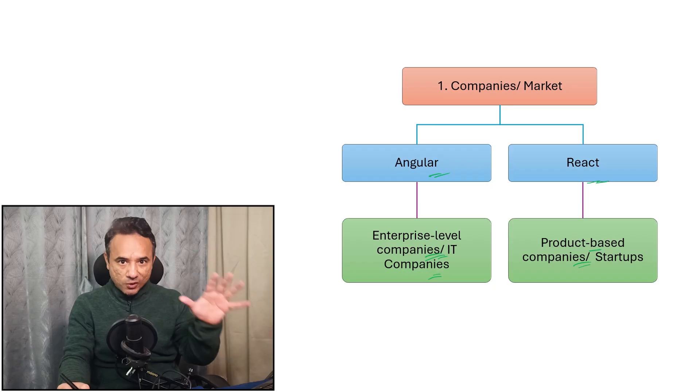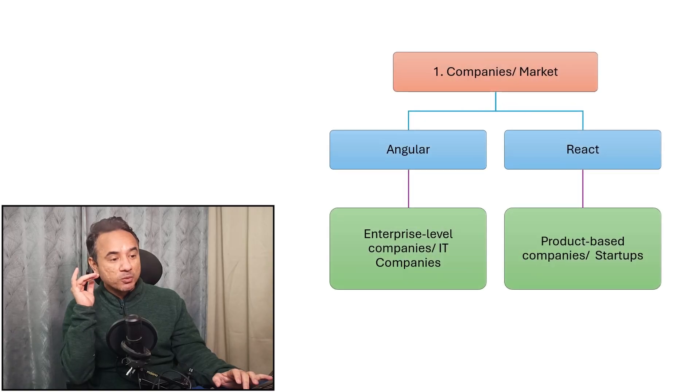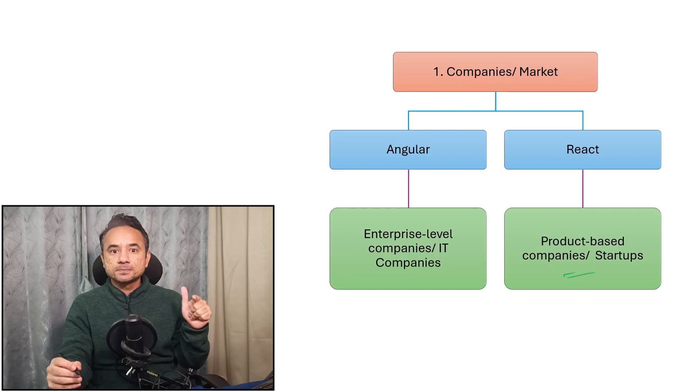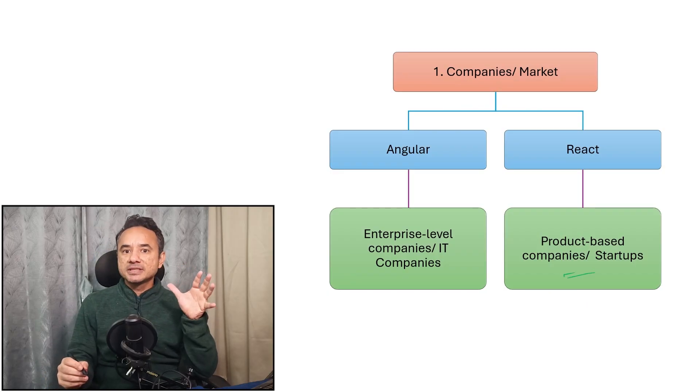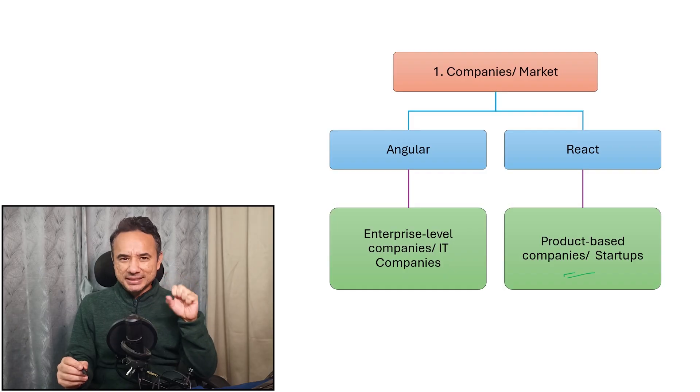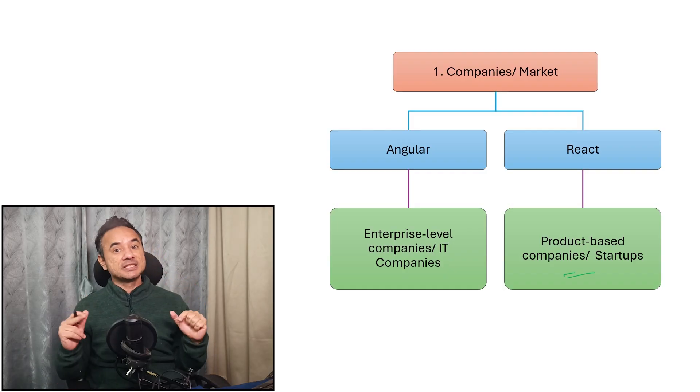Why do enterprise IT companies love Angular? Because Angular is a complete framework. It gives everything ready: routing, forms, validations, services, modules, dependency injection, everything official inbuilt in Angular framework. And enterprise companies love structure, software. Angular gives that. That's the reason.